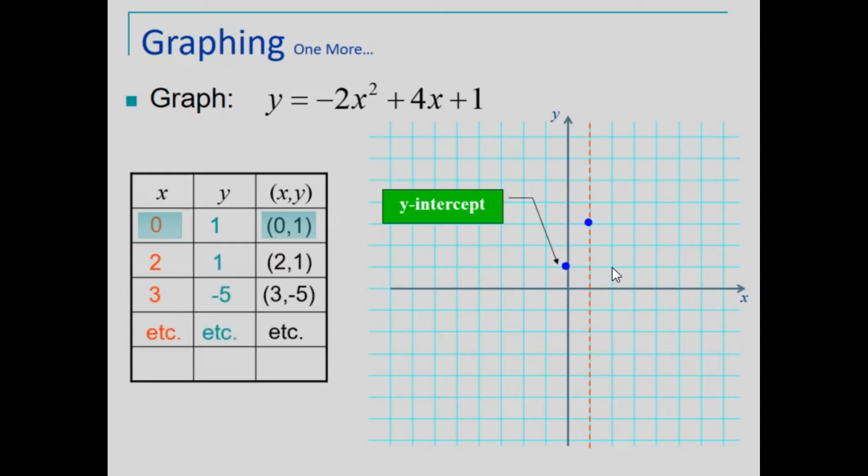We now could plot our parabola or find other points and connect them with a smooth curve. We now have a graph of the parabola, and as initially noted, it is opening downward.